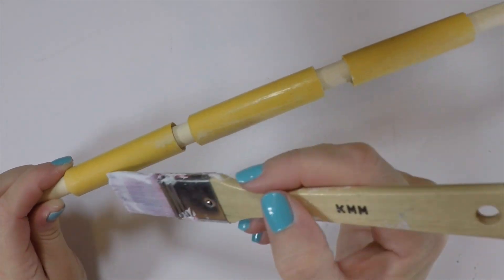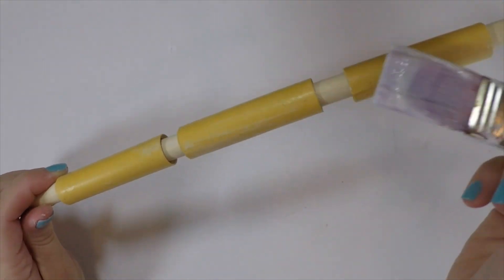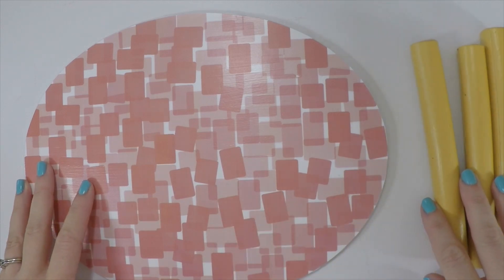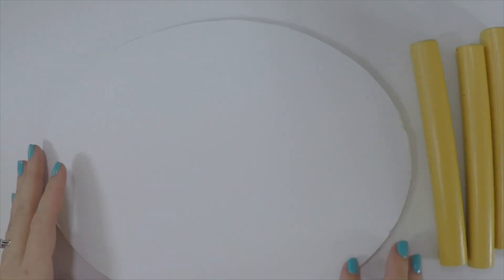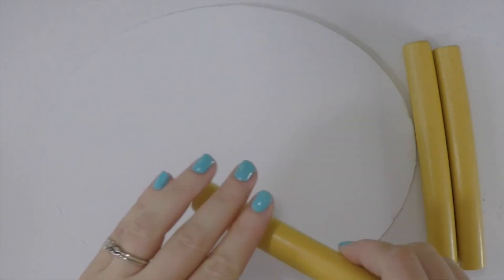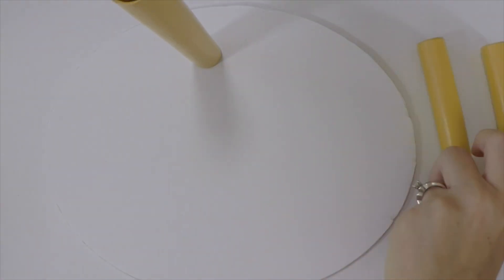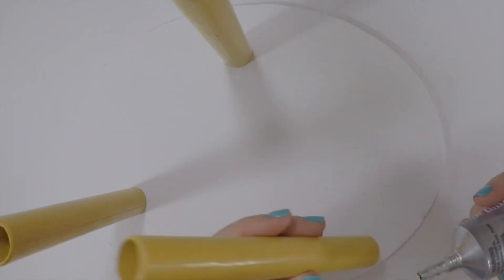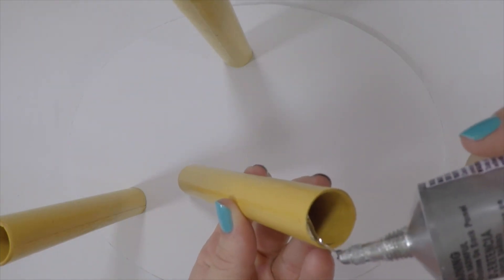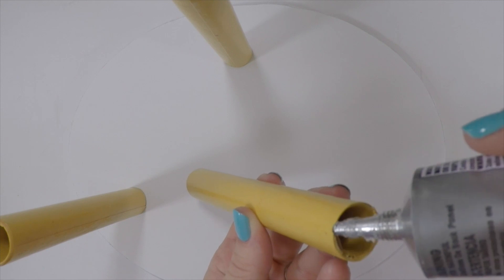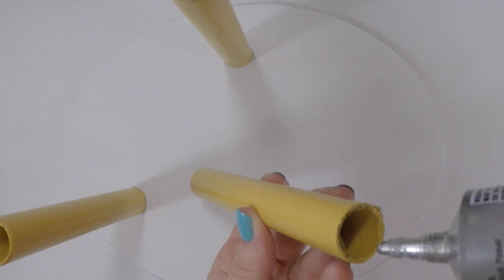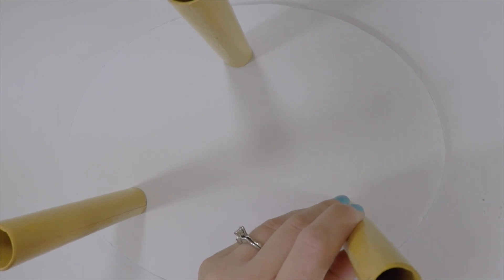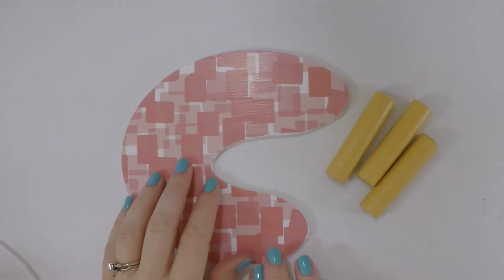Mod Podge all of the legs before you attach them to the table. Now your table pieces are ready to be put together. Take your large table top, turn it upside down and place the 3 legs where you want them to go. Make sure you spread them evenly so it doesn't topple over once you turn it around. Take your E6000 glue and apply it to the inside and edge of the table leg and then press it into place.